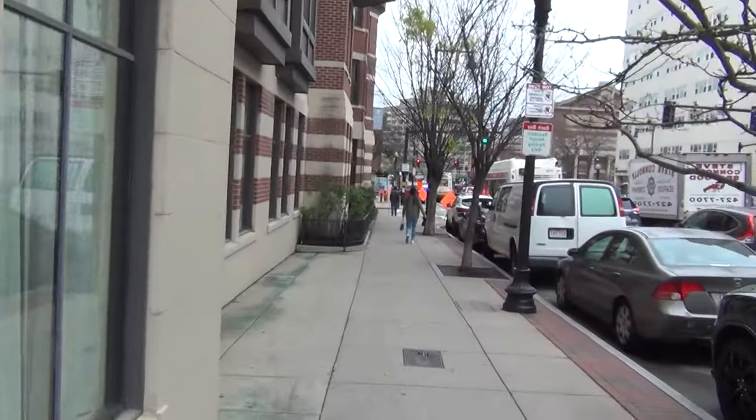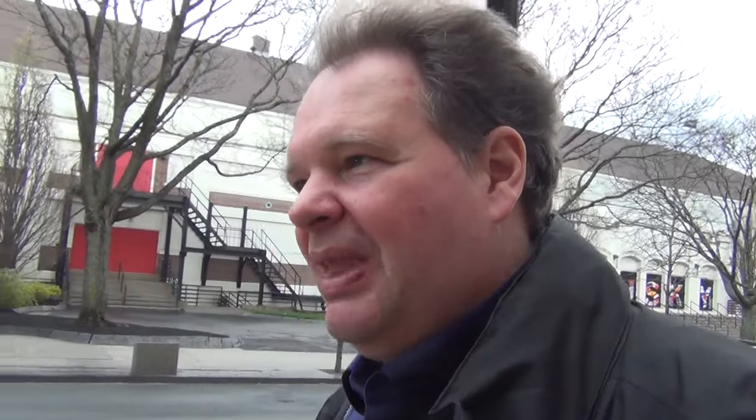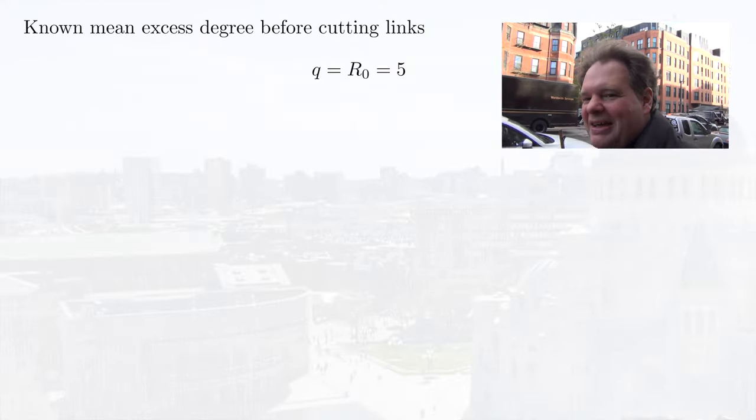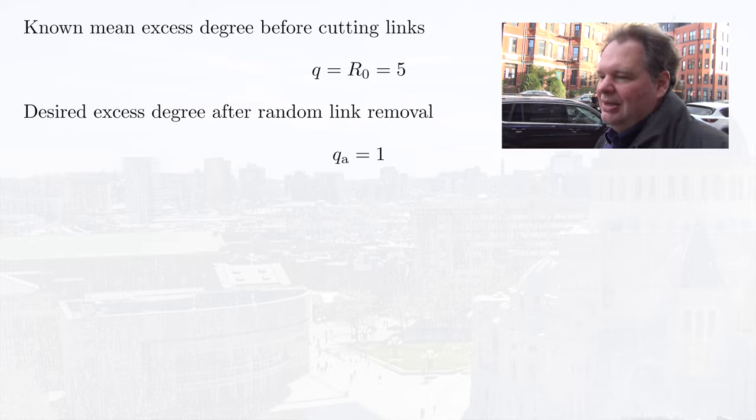One of the most interesting properties of an epidemic is its basic reproductive number, R0. R0 is defined as the number of secondary infections a single affected person would cause in a population where the disease is not yet widespread. We can think of R0 as the mean excess degree of a very particular network — not the network of social contacts, but the network of links across which the disease would actually spread if given a chance. Suppose we are dealing with a disease where R0 is 5. To stop this epidemic, we would need to reduce the mean excess degree below 1.